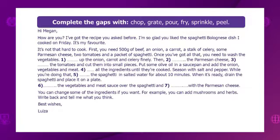Put some olive oil in a saucepan and add the onion, vegetables, and meat. Fry all the ingredients until they're cooked. Season with salt and pepper. While you're doing that, boil the spaghetti in salted water for about 10 minutes. When it's ready, drain the spaghetti and place it on a plate. Pour the vegetable and meat sauce over the spaghetti and sprinkle with the parmesan cheese. You can change some of the ingredients if you want. For example, you can add mushrooms and herbs. Write back and tell me what you think. Best wishes, Louisa.